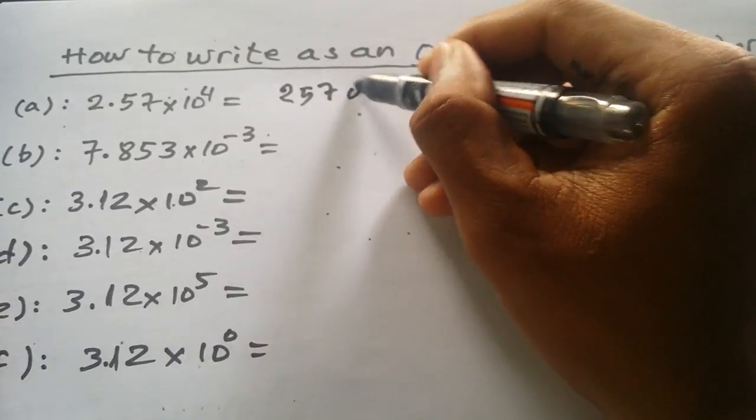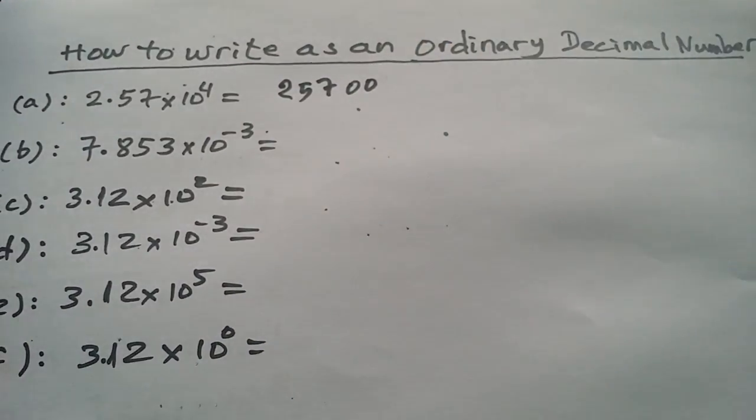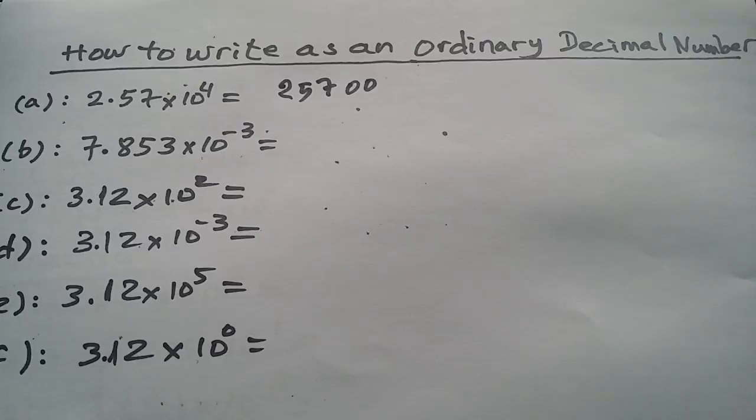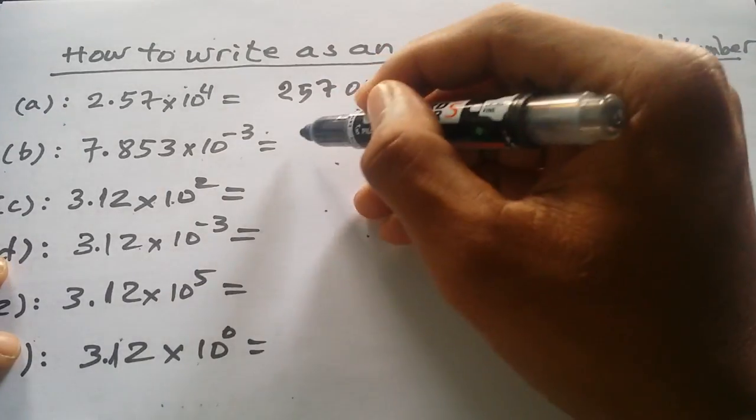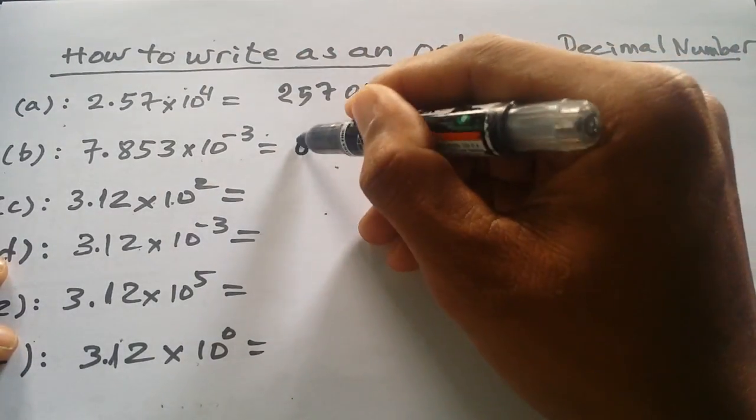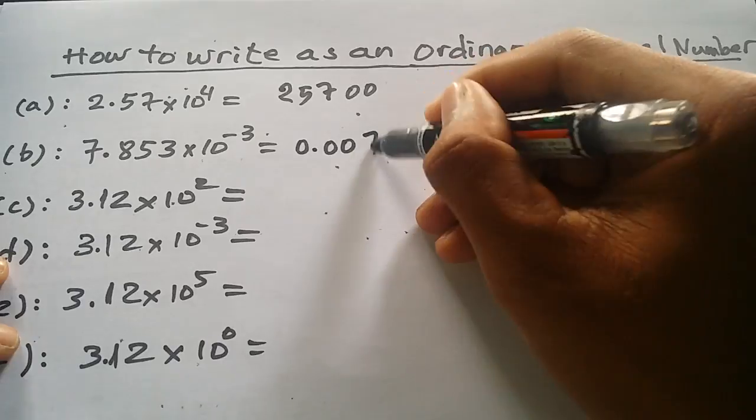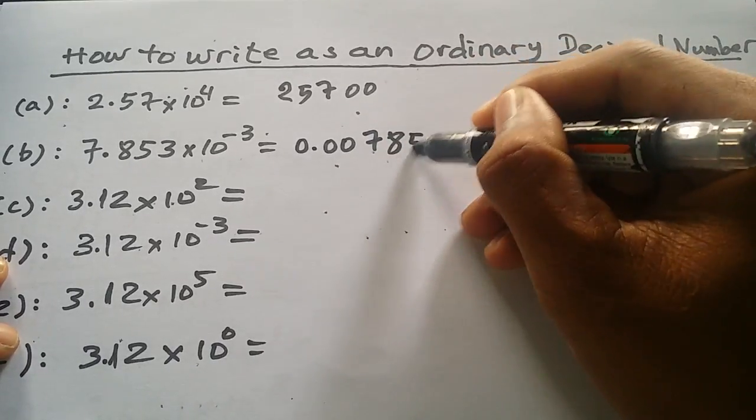We can write zero, zero, because we cut two times. We added zero two times. So in here it will be 0.007853.